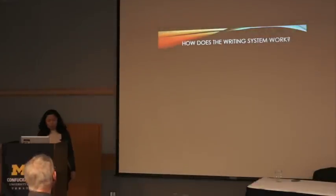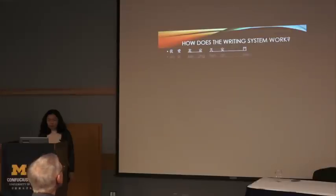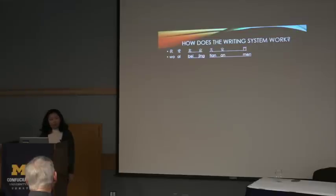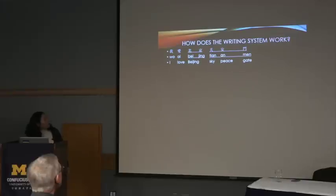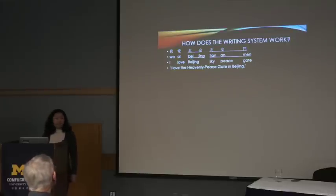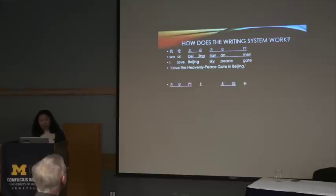Let me give you a couple of sentences to analyze. The first reads: Wo ai Beijing Tiananmen. For each character there's one syllable: wo, ai, Beijing, Tiananmen. This line is from a famous children's song. The English translation is 'I love Beijing.' Beijing is two characters, one word. Tiananmen means 'sky-peace-gate' — the overall meaning is 'I love the heavenly peace gate in Beijing,' which is the entrance to the Forbidden City.